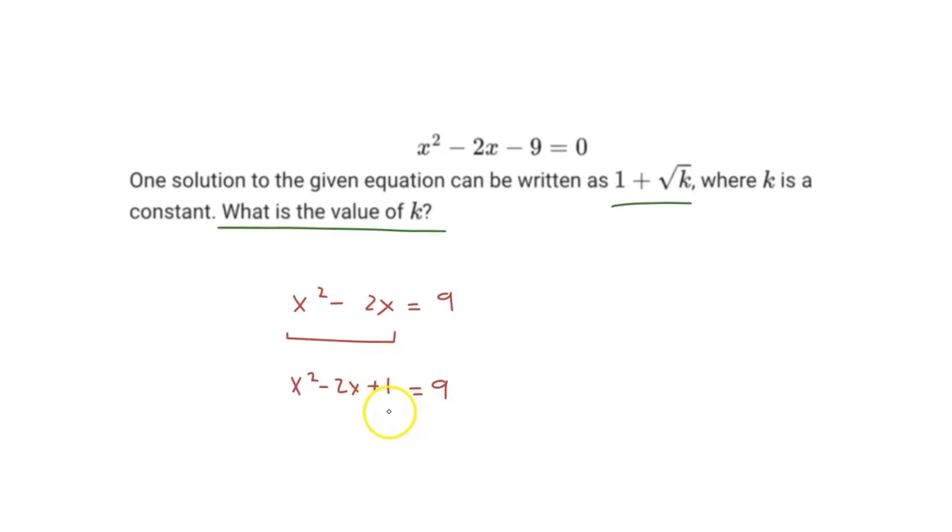And that should be equal to 9. And because we've added a positive 1 to the left side, we have to add it to the right side. And this right here just becomes x minus 1 squared equals 10.